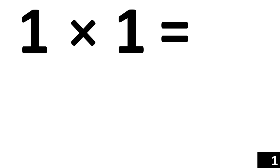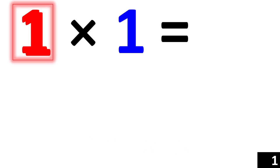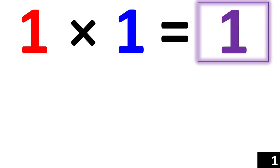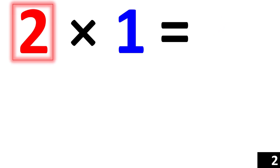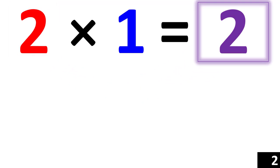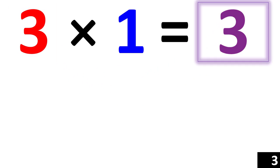The first example is 1 times 1. Any number times 1 is that number, which means 1 times 1 is equal to 1. And 2 times 1 is equal to 2. 3 times 1 is equal to 3.